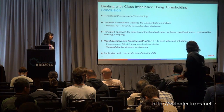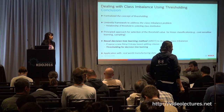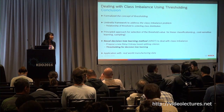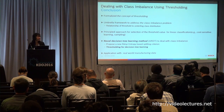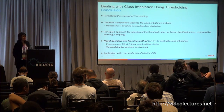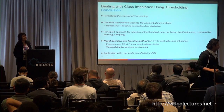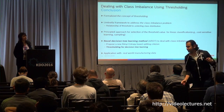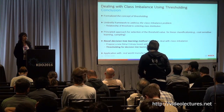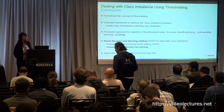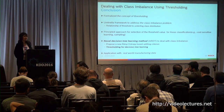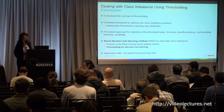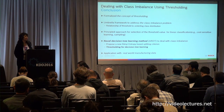Question: any intuition on how it would do with more extreme imbalance, like financial fraud at 1 in 10,000? The speaker replied: when talking about scrap from 6 to 16%, there are also scenarios where scrap was like 0.5%, and we tried these methods. At times they gave good results, but there's no golden recipe that we are aware of as of now.